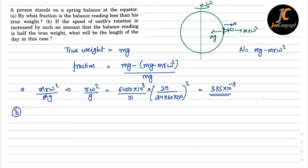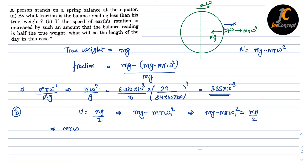For part B, the speed of earth's rotation is increased such that the balance reading is half the true weight. So N equals mg/2. In this case, N also equals mg minus mr·ω₁², where ω₁ is the new angular velocity due to the increased rotation speed. Setting these equal: mg minus mr·ω₁² equals mg/2.